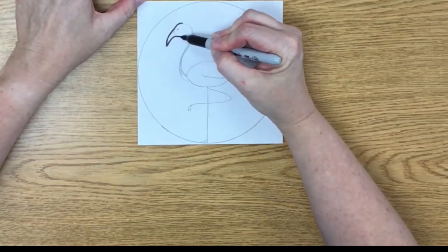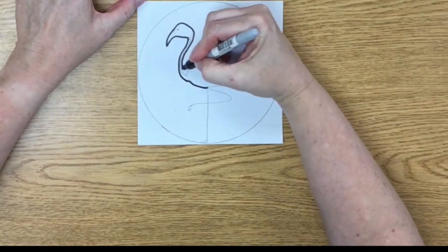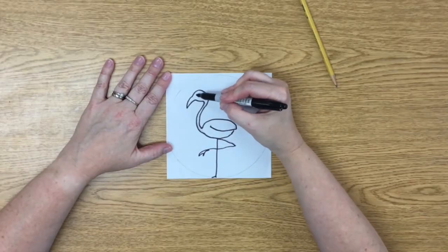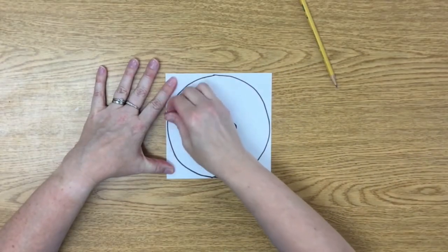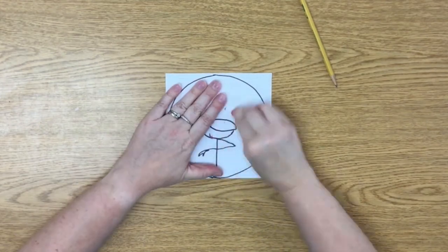Yippee, our flamingo is drawn. Now trace all the pencil lines in black sharpie or black crayon. Do not use a regular black marker because it will smear when we use our other colors. Go to crazy town with your eraser. Get rid of all those extra pencil lines.